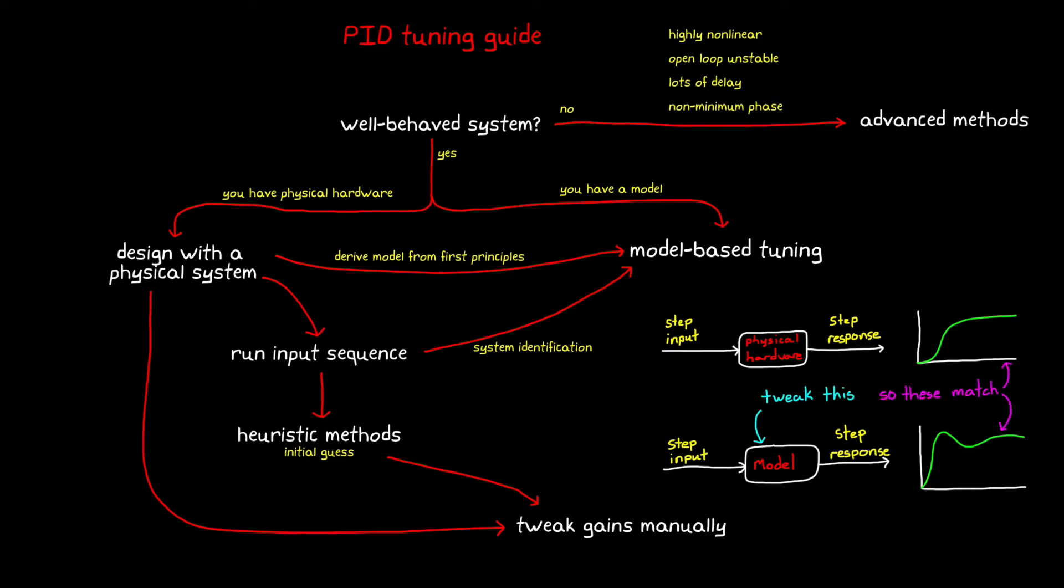For simple system ID tools, the model structure needs to be defined ahead of time. For example, you tell it to fit the system to a first order transfer function. More advanced tools will find the optimal model structure for you, as well as the coefficients.